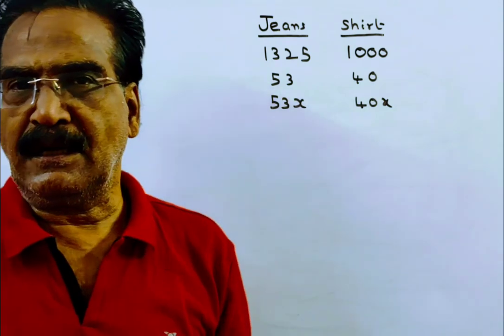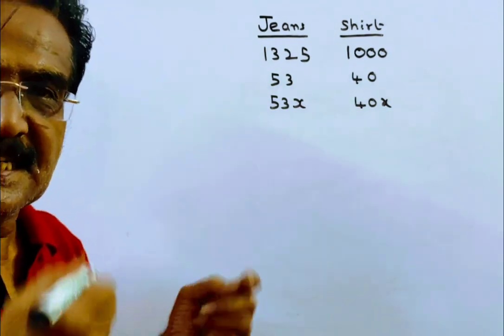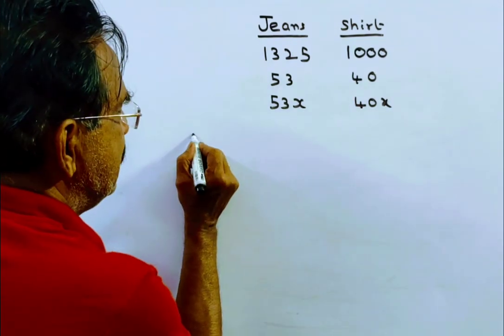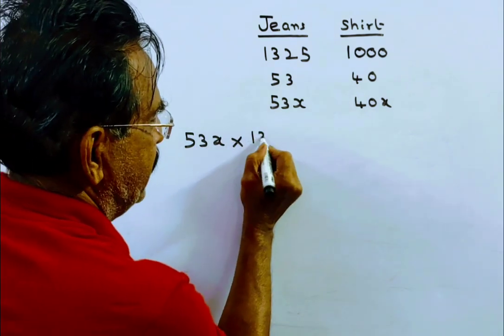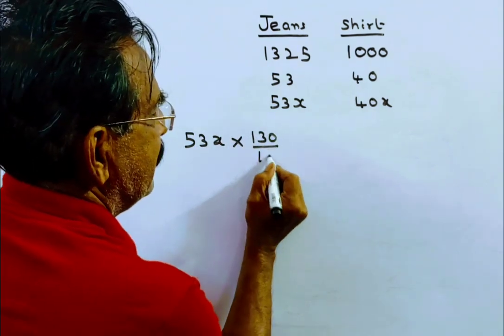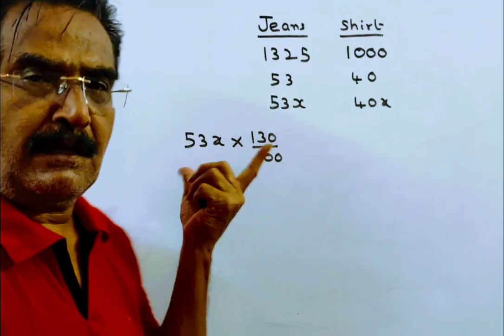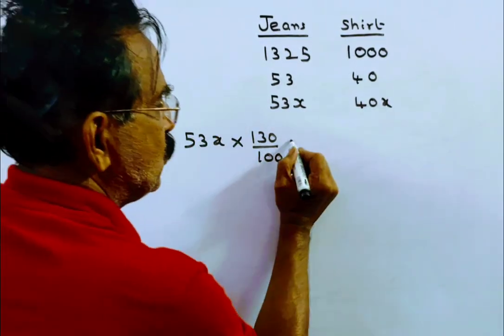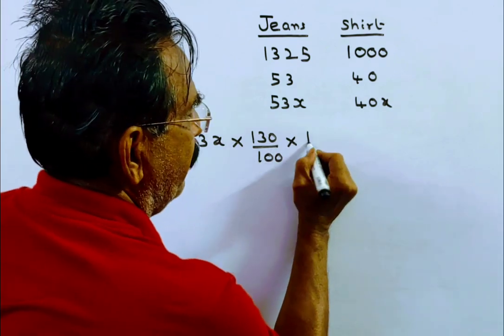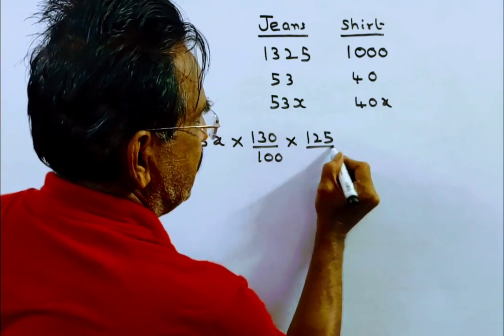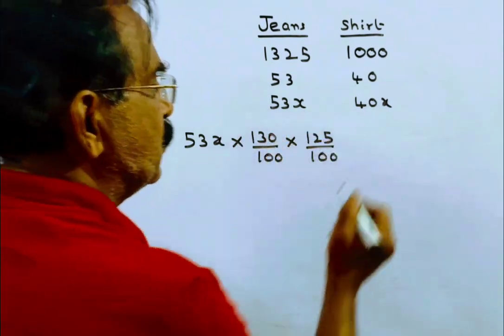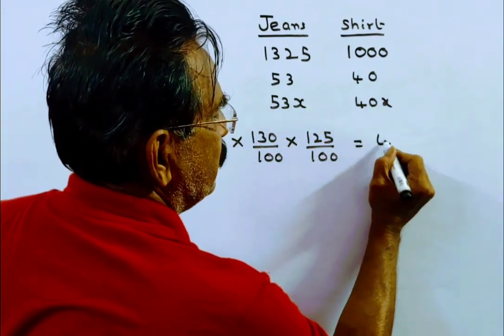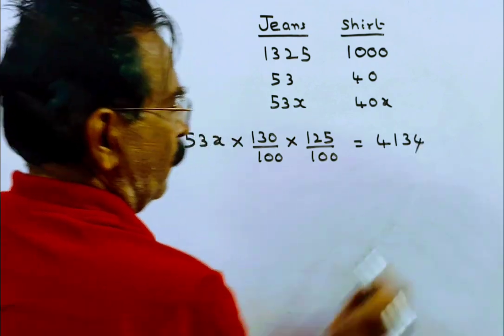Now the cost price of the jeans is increased by 30%. This becomes the market price, and this is sold at a profit of 25%. That means it is sold at 125%, so the selling price is 4134.